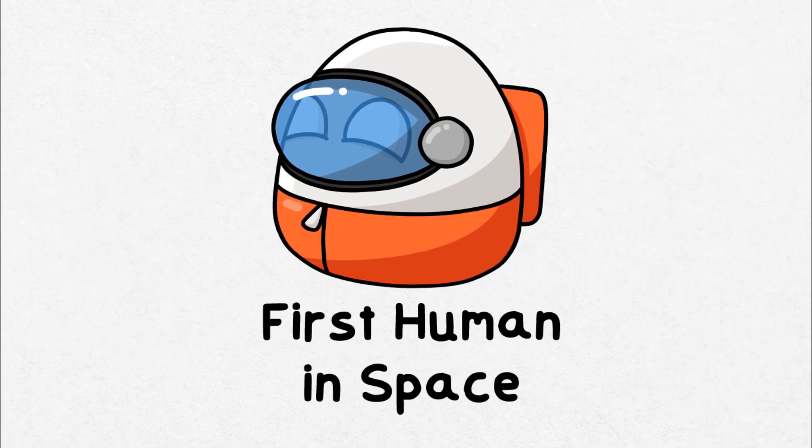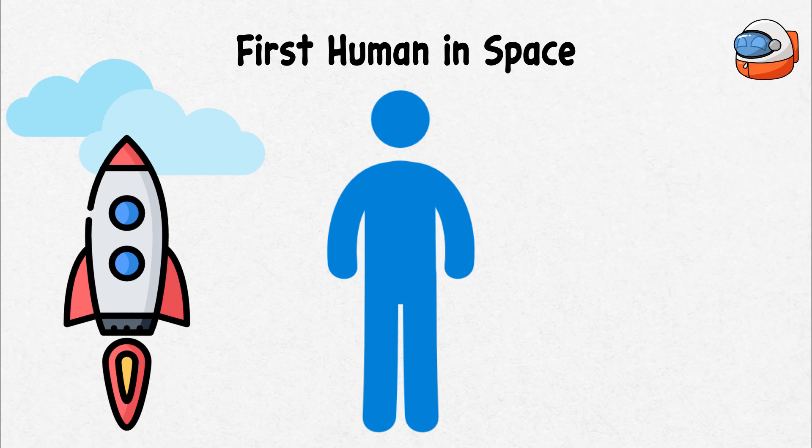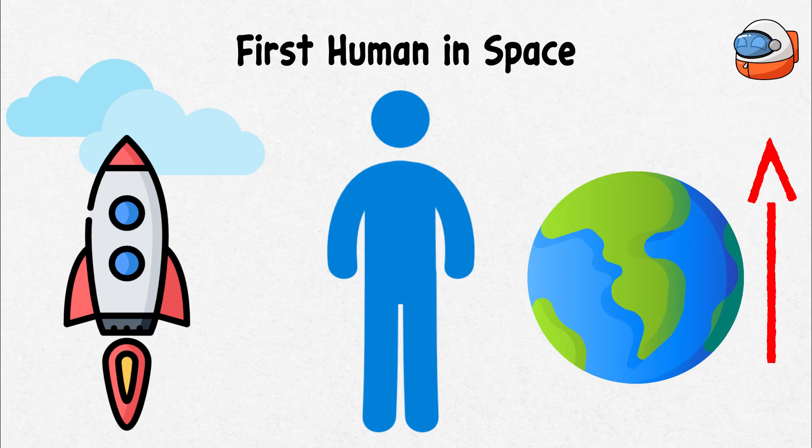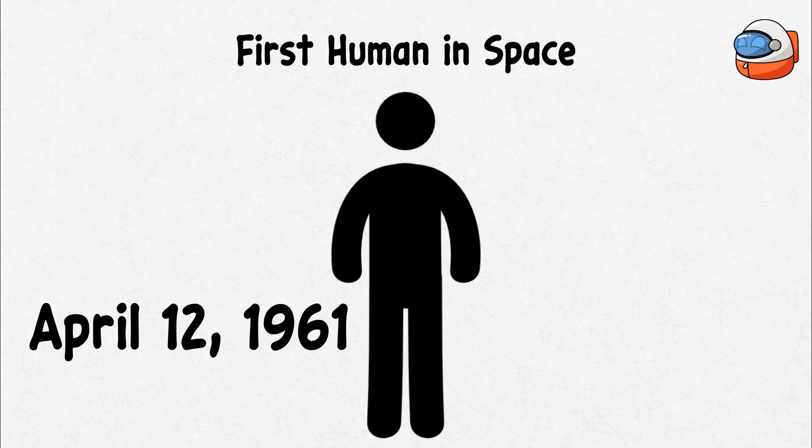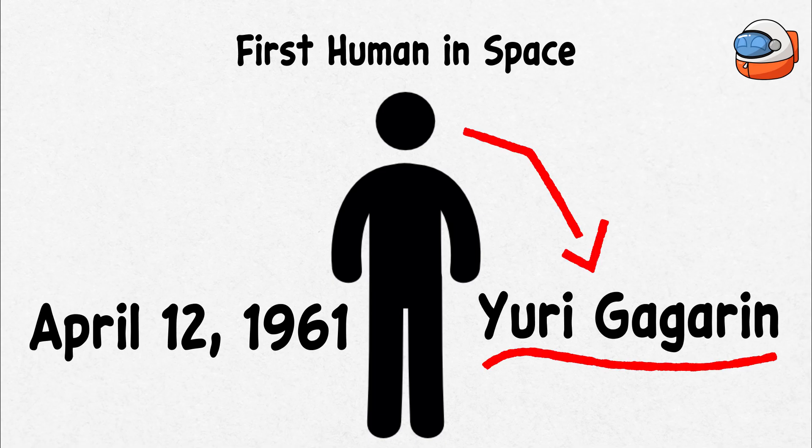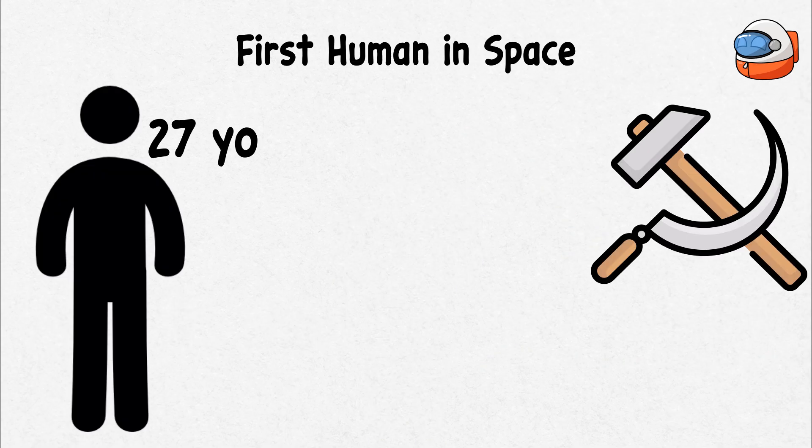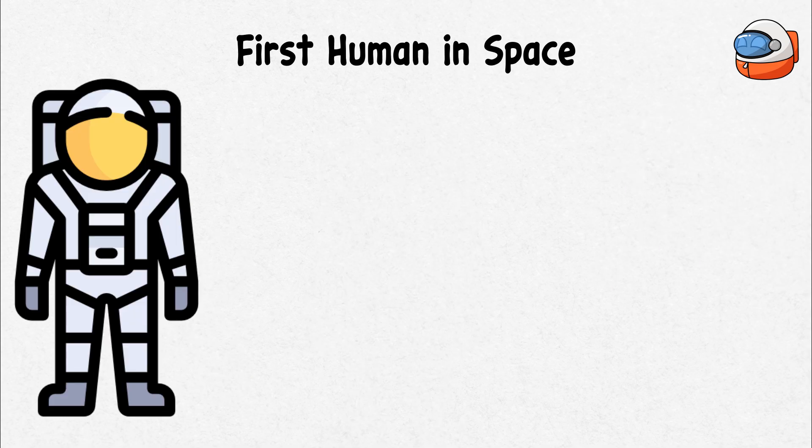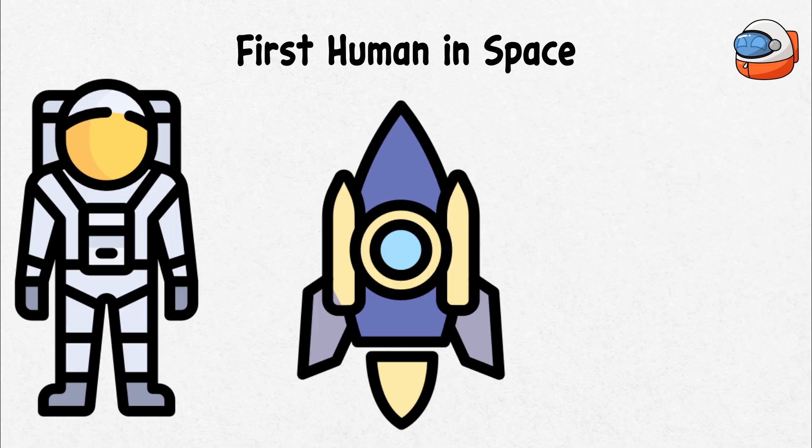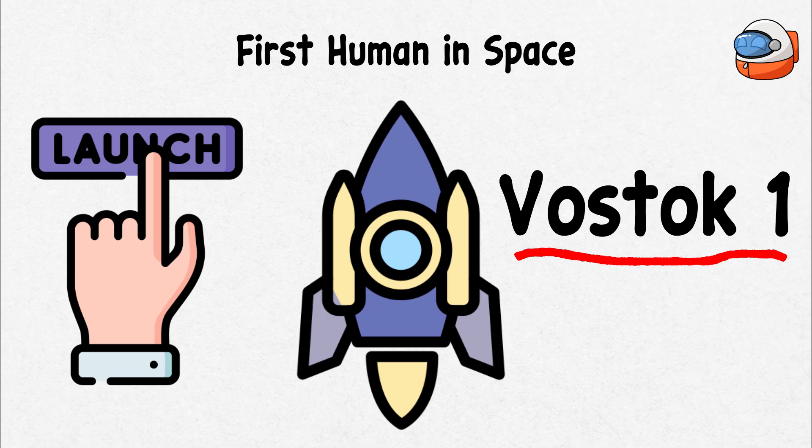First human in space. Humans had always thought about traveling beyond the clouds and outside Earth, and that thought was soon put to rest when on April 12th, 1961, Yuri Gagarin, a 27-year-old Soviet cosmonaut, became the first human to journey into space. Gagarin strapped into a small spacecraft named Vostok 1, ready to be launched into the unknown.